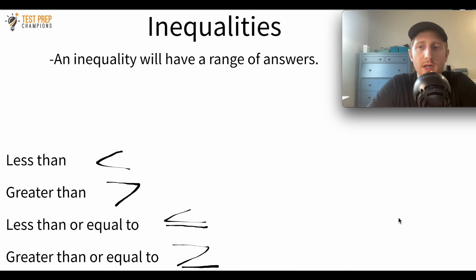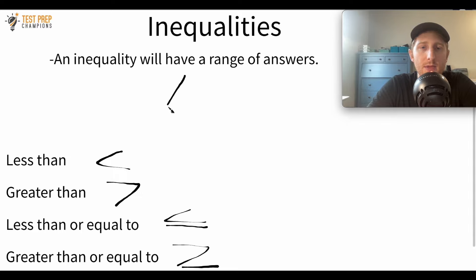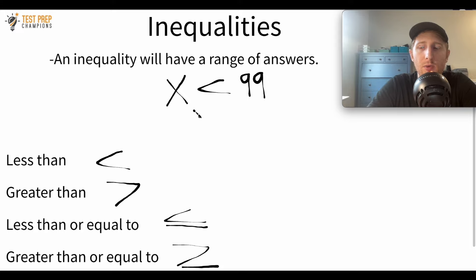If you want more examples of solving equations, I'll put a link in the description. The skills needed to solve equations are the same skills you'll need to solve inequalities. The process for solving inequalities is very similar to solving equations, but there's one key difference I'll cover shortly. The first point to understand is that an inequality will have a range of answers. For example, if X is less than 99, we don't know exactly what X is, but we know it has to be something less than 99. Here are the inequality signs: less than, greater than, less than or equal to, and greater than or equal to.